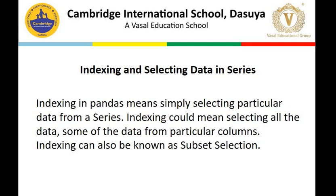In the last lecture we focused on indexing and selecting data in series, and also how to slice the data. Indexing in Pandas means simply selecting particular data from a series. We can select all of the data or a particular subset. Indexing can also be known as subset selection, which is what we mean by the term slicing. So slicing, selecting, and indexing are very interrelated and interdependent terms.